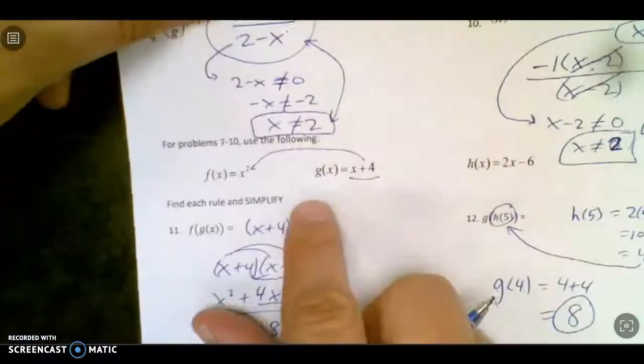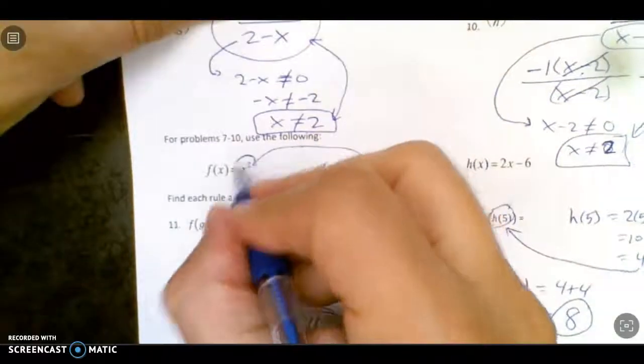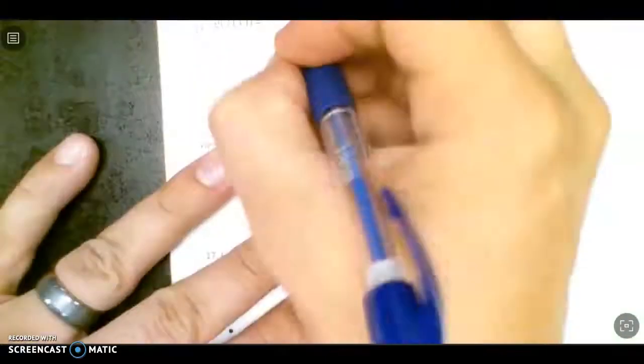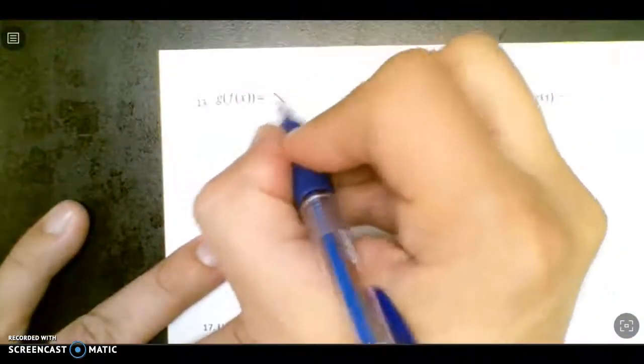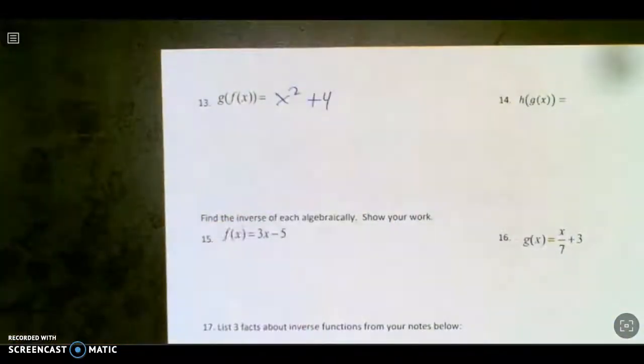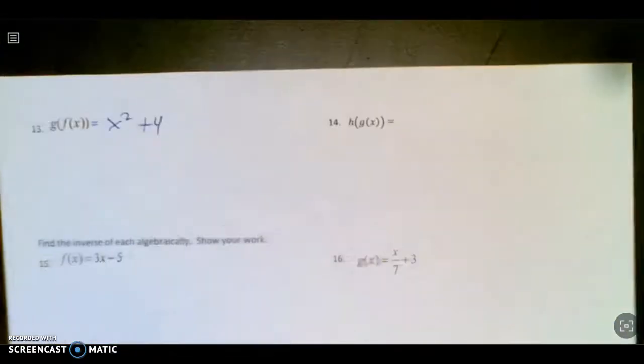So here we go on the back. g of f of x. So g of f of x is a little easier because I'm going to take it the other way. This goes in for that x. So it's just x squared plus 4. No big deal there.